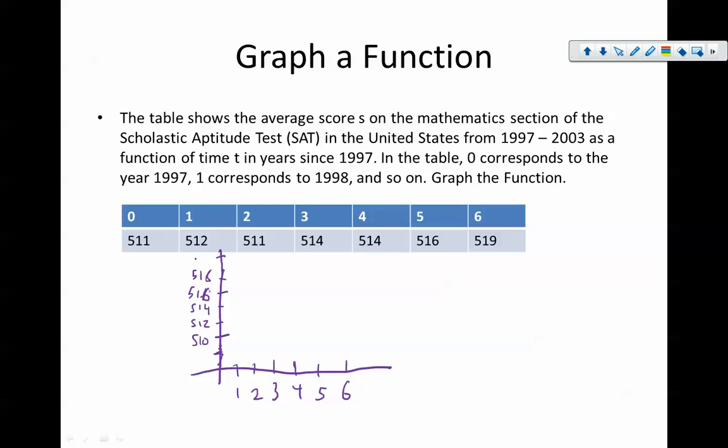So if I am graphing these, I'm at 0, 511. 511 is right here. And then I'm at 1, 512, which is there. I'm at 2, 511, which is here.